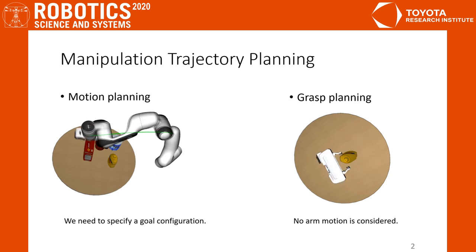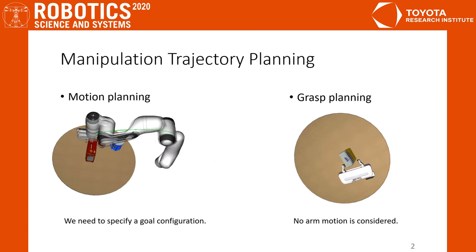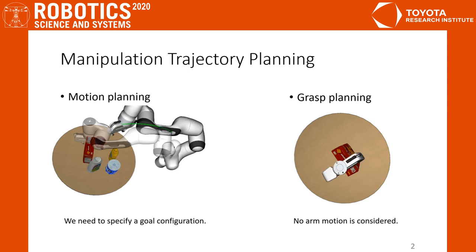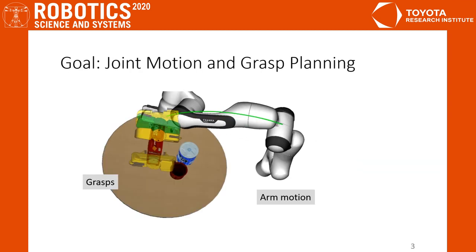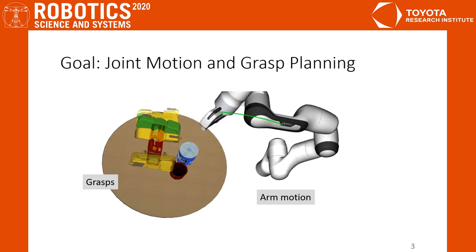In the literature, motion and grasp planning are often solved separately and require some post-processing steps to connect the two plans. A common pipeline is to loop over all grasps and check if there exists a trajectory to reach them.